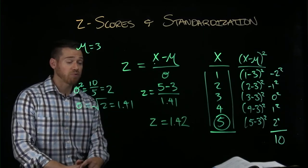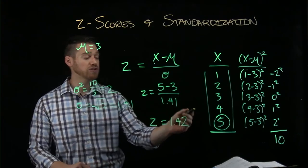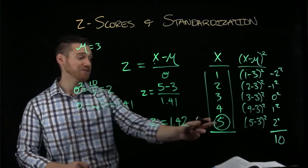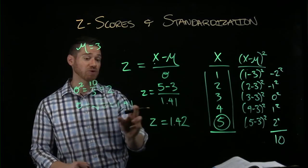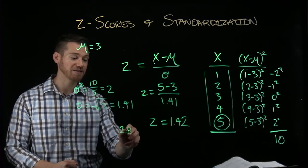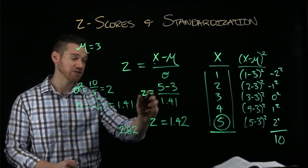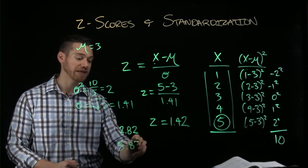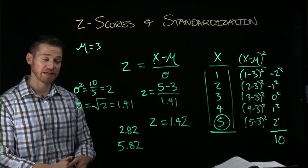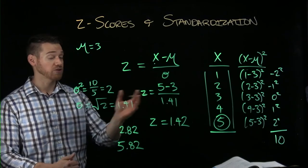And so our z-score is 1.42. And that tells us that this is 1.42 standard deviations above average. And if a standard deviation is 1.4, and this is 2 above, it makes sense. We're not quite 2 standard deviations above. Being 2 standard deviations above would be 2.82 higher. So the score that's 2 standard deviations above would be 5.82. So we can't be 2 standard deviations above. We're about 1.5 standard deviations above. And so this is how we can calculate a z-score for a score in a given set.